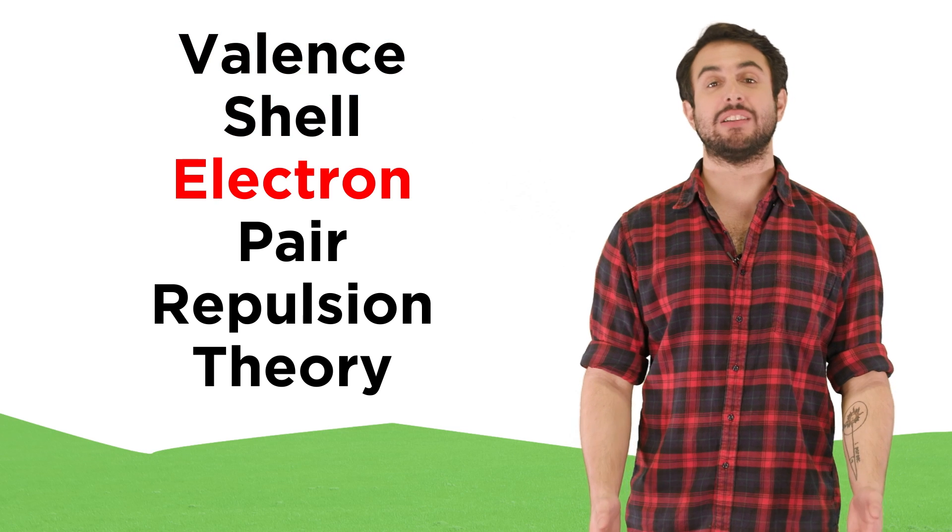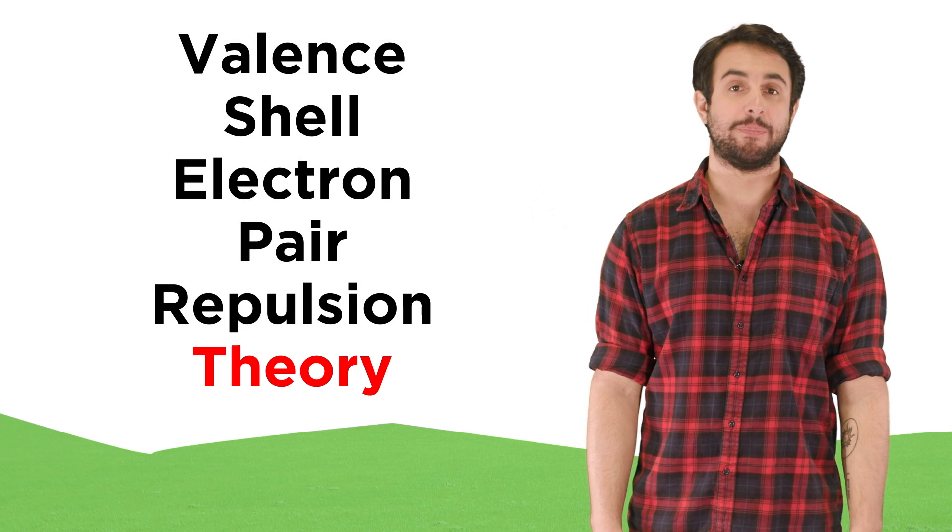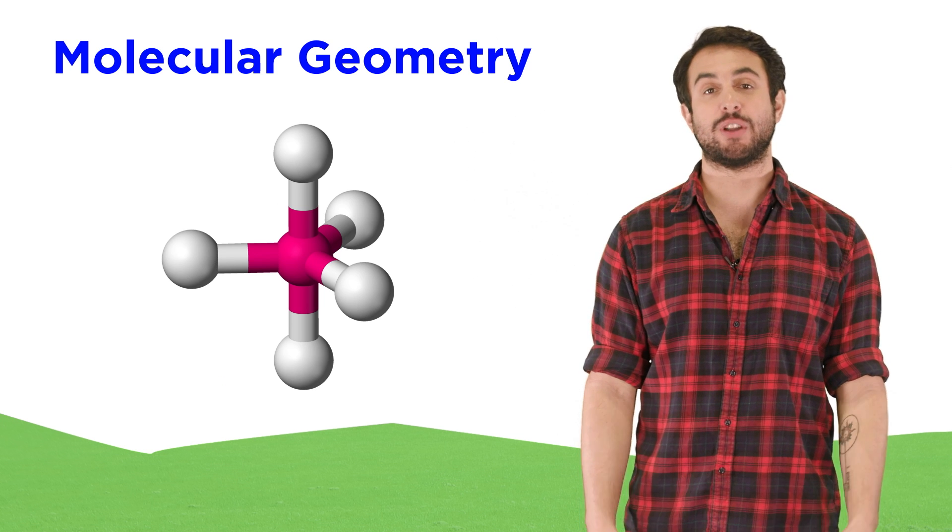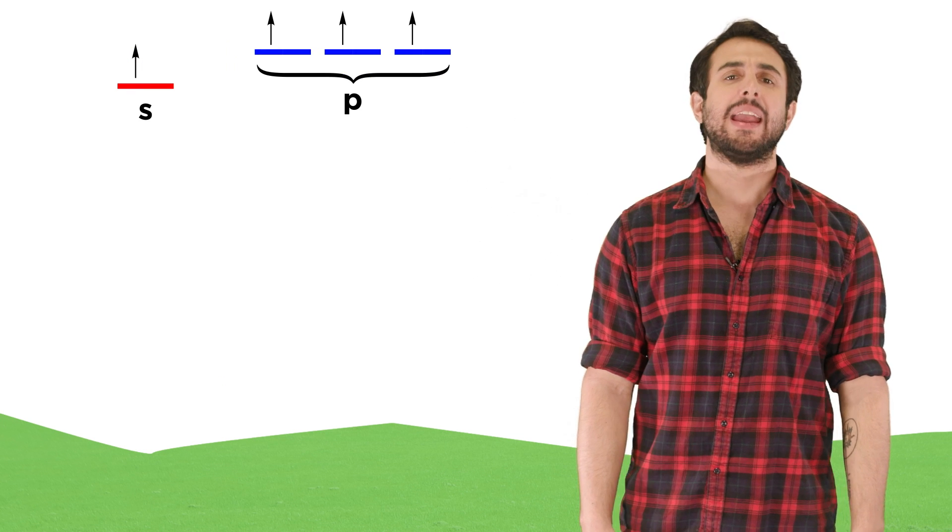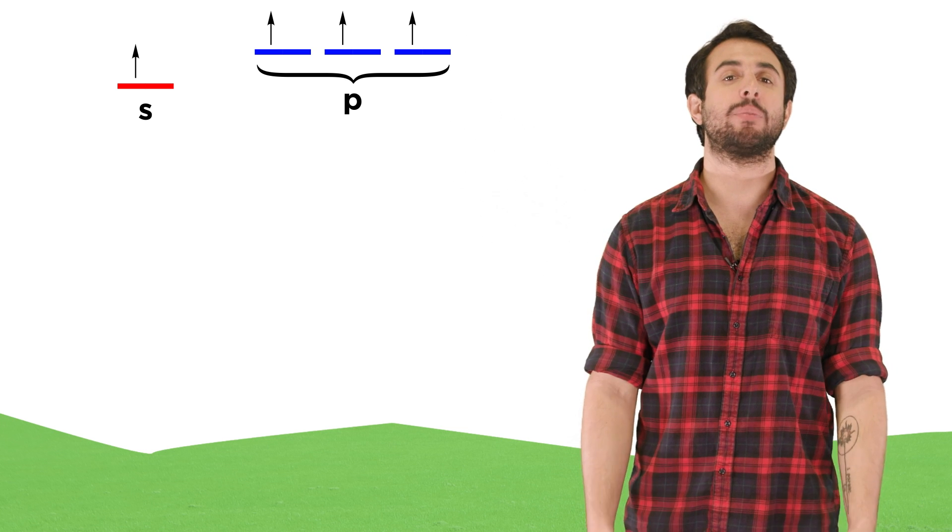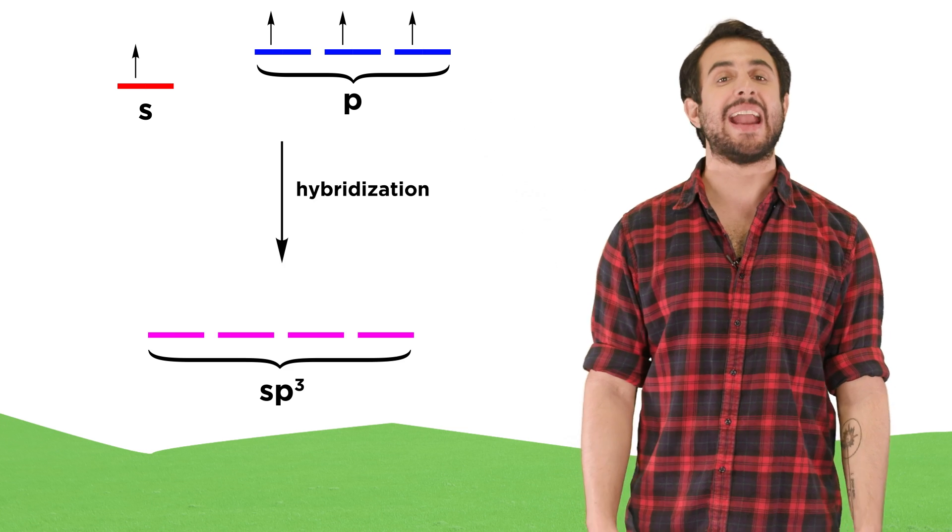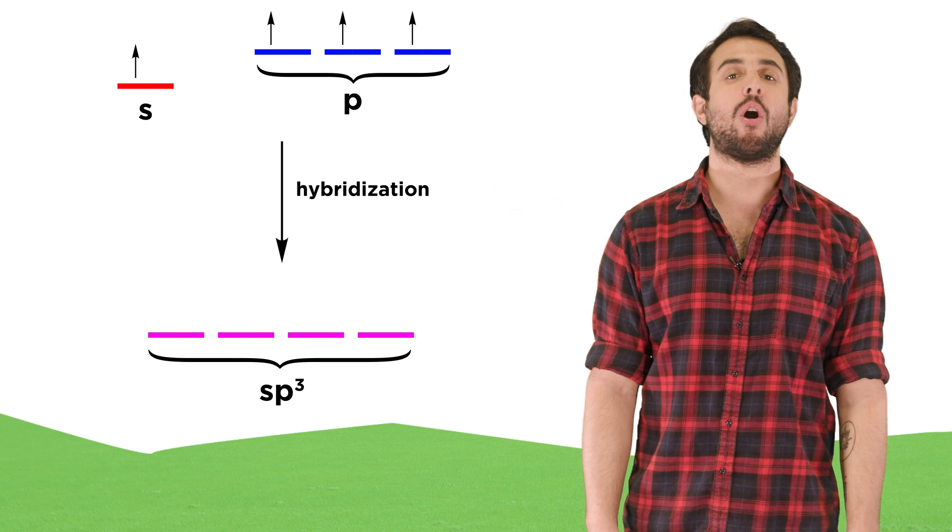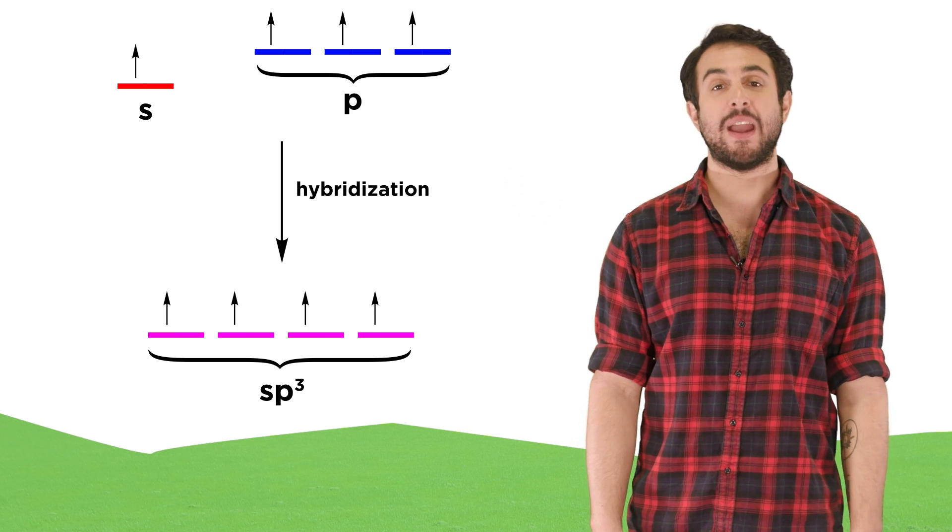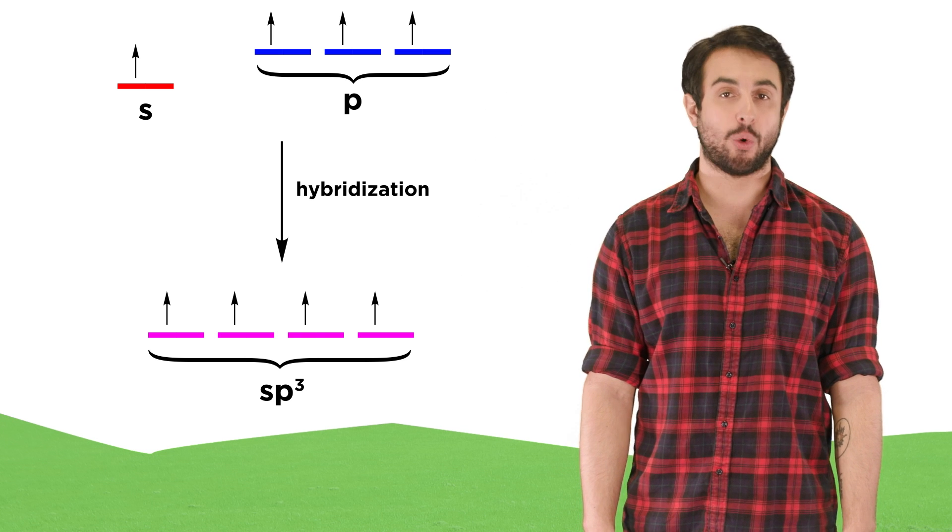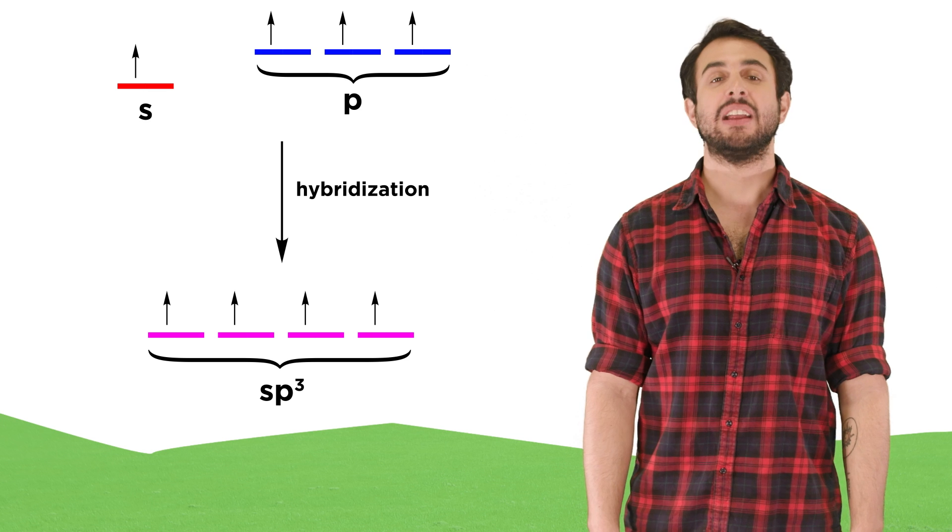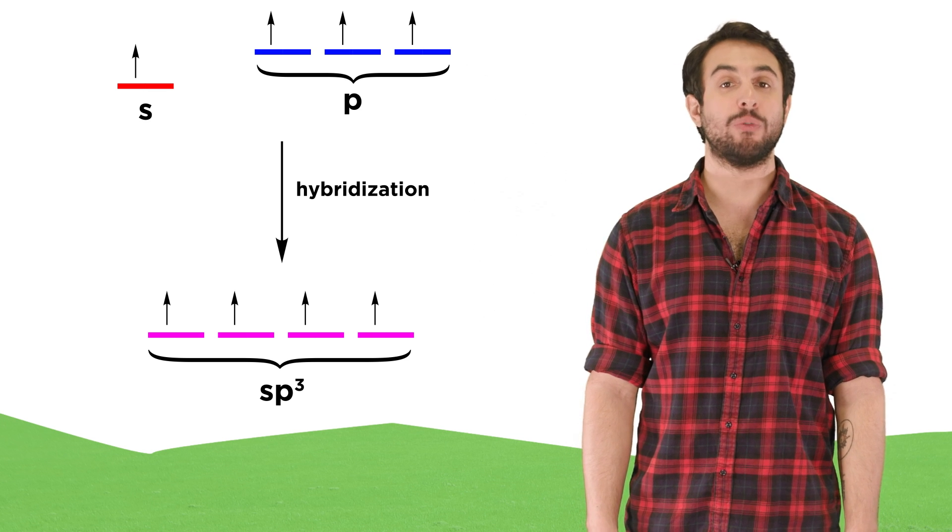We've learned about valence shell electron pair repulsion theory, which is a theory that was developed to explain experimentally observed molecular geometries. It tells us that the central atom of a molecule can take some number of its atomic orbitals and hybridize them, making them all of equal energy, or degenerate, and then unpaired electrons in these hybrid orbitals can form covalent bonds with other atoms, given some kind of orbital overlap.